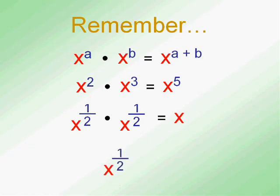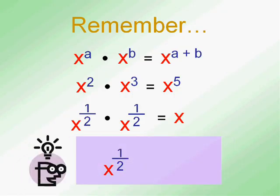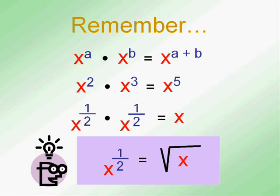Believe it or not, x to the half stands for something that you already have seen. If x to the half times x to the half equals x, it's the same as the square root of x. Because if we have to multiply it by itself to get x, that's what it means to be the square root of x.